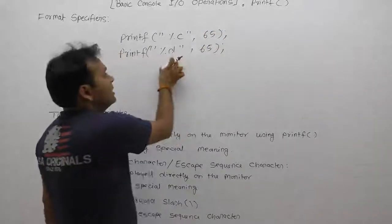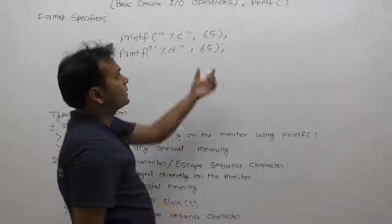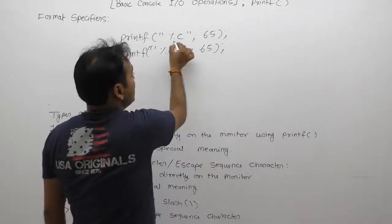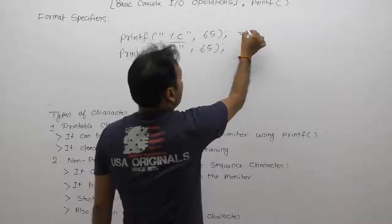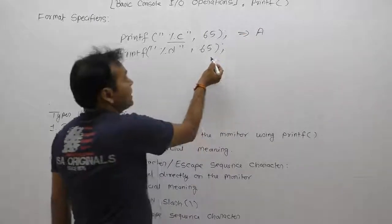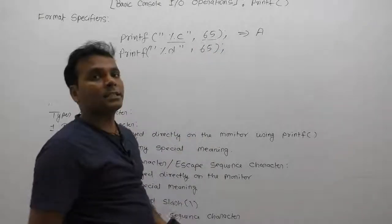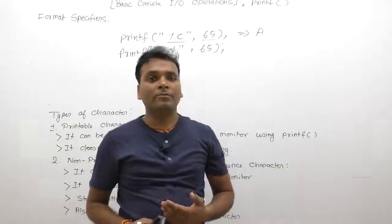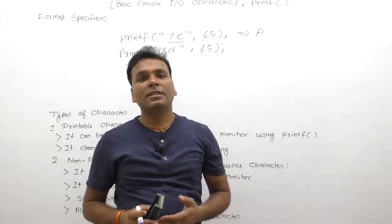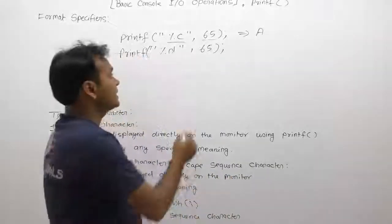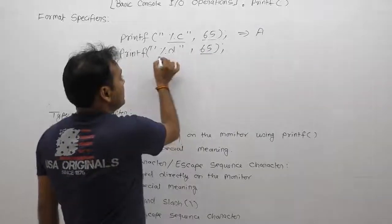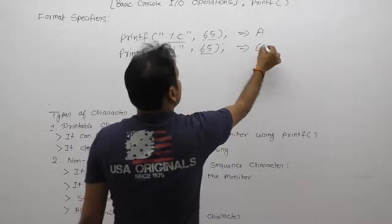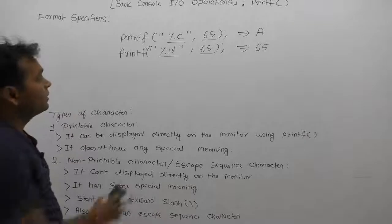In place of a character, we can also supply its ASCII value directly. Here we supply 65 as an integer or ASCII value, but display it using percent c — so the output is 'a', the character value of ASCII 65. If you have an ASCII value and want to display the character value, use percent c. If you supply the ASCII value with percent d, 65 is displayed as the number 65 — no special meaning.